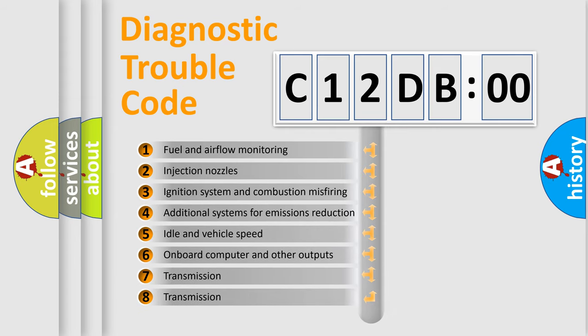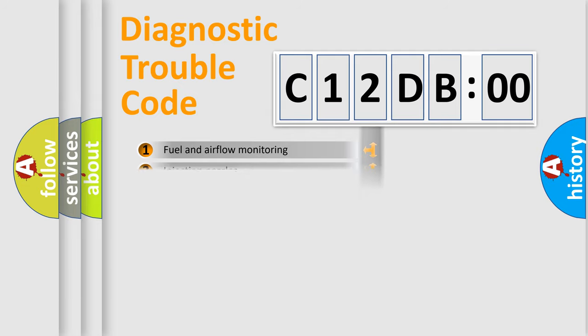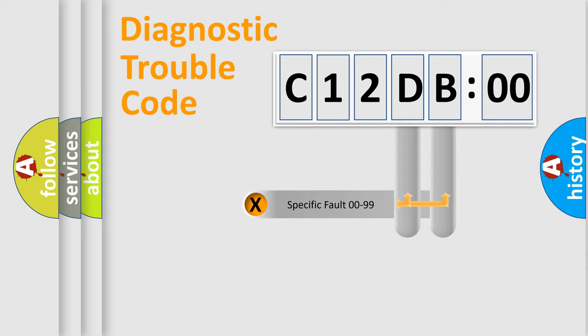The third character specifies a subset of errors. The distribution shown is valid only for the standardized DTC code. Only the last two characters define the specific fault of the group.